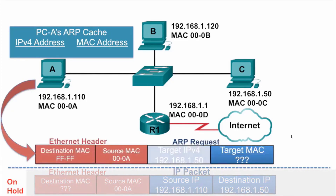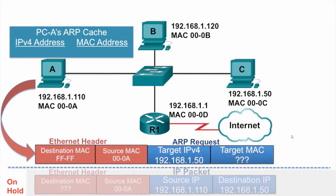The ARP request contains the target IPv4 address — this is the IPv4 address which is known by PCA — and the target MAC address, which is unknown. This is what PCA is wanting to find out.